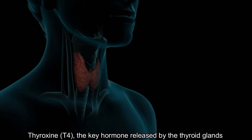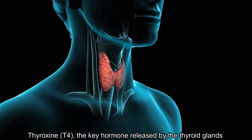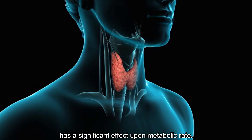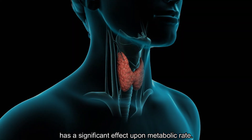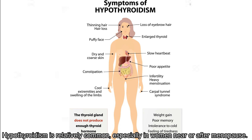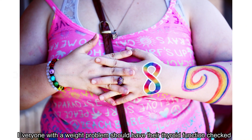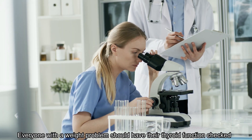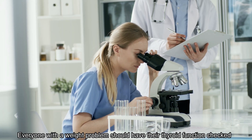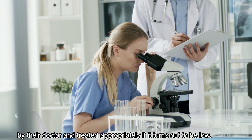Hormonal levels — thyroxin: the key hormone released by the thyroid glands has a significant effect upon metabolic rate. Hypothyroidism is relatively common, especially in women near or after menopause. Everyone with a weight problem should have their thyroid function checked by the doctor and treated appropriately if it turns out to be low.